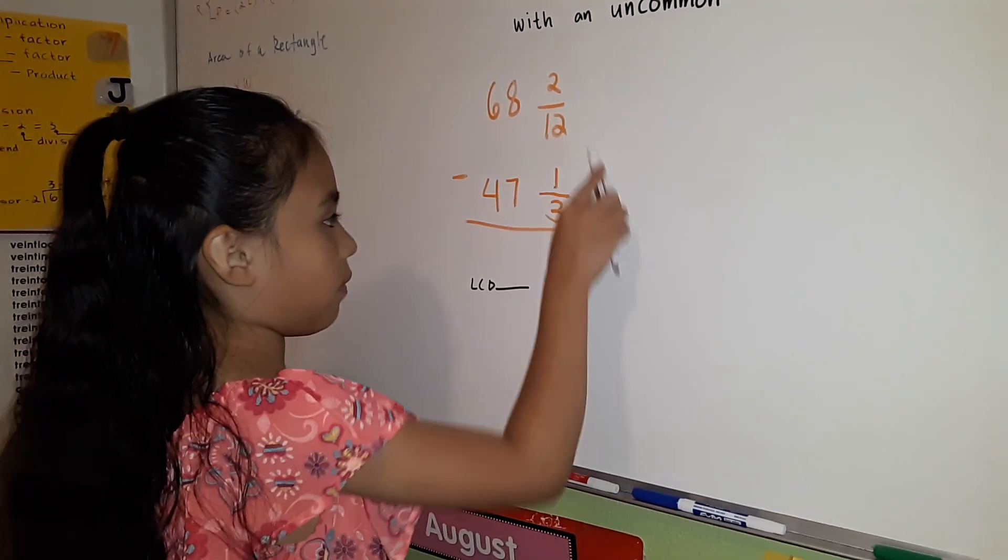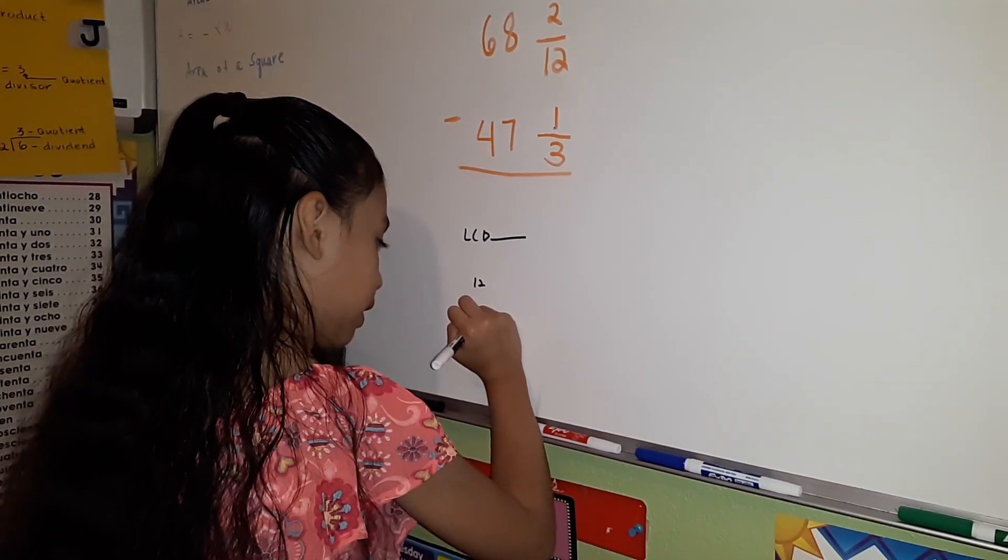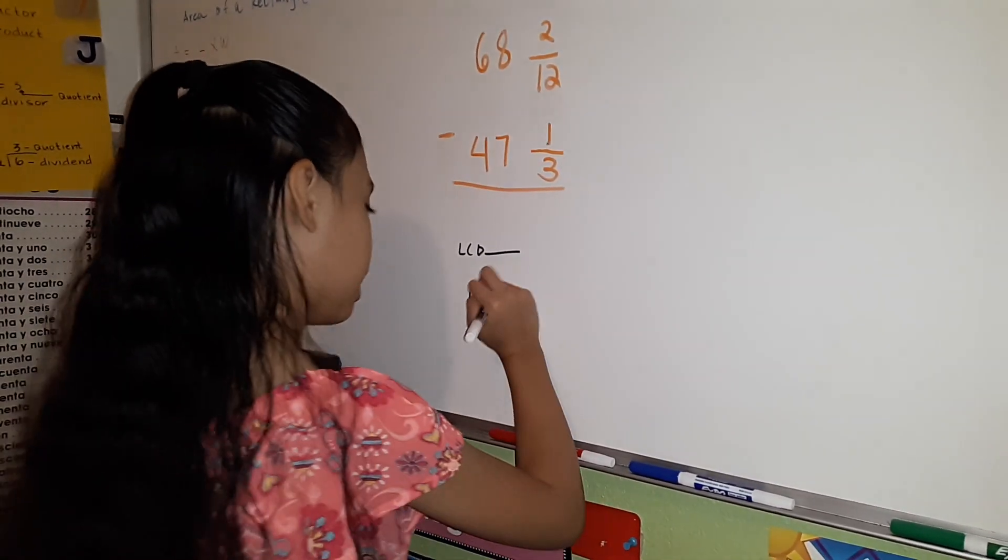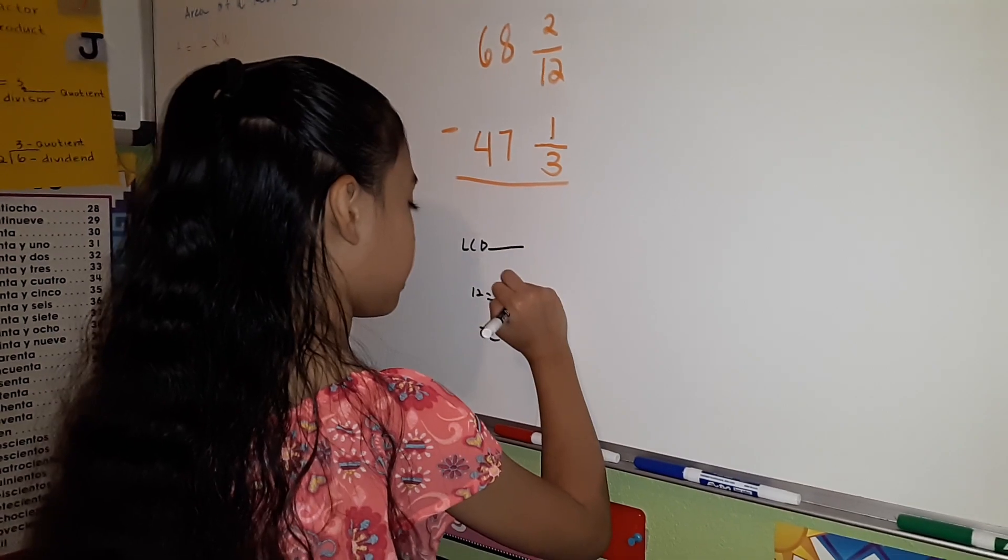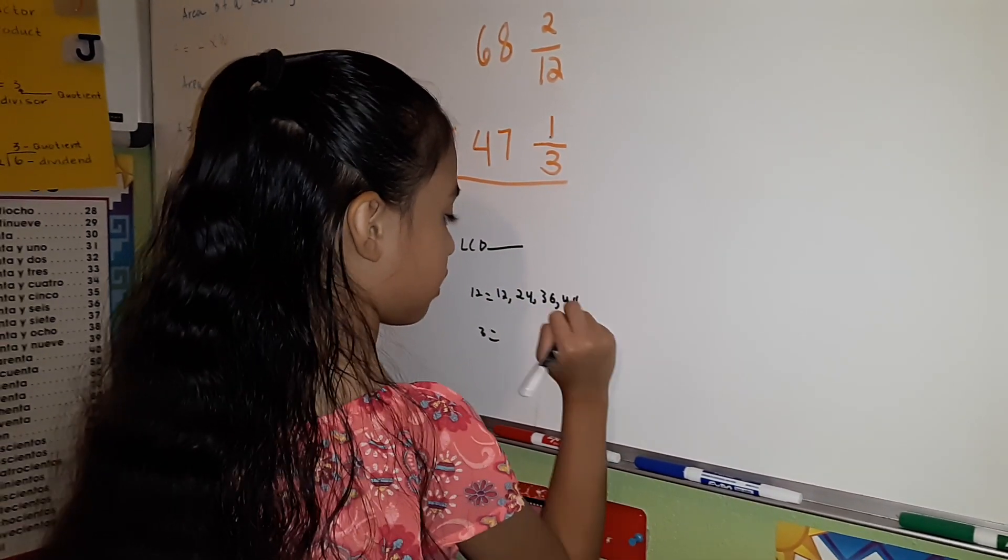To find the LCD of 12 and 3, we're going to use the multiples of 12 and 3. The multiples of 12 are 12, 24, 36, 48, and so forth.